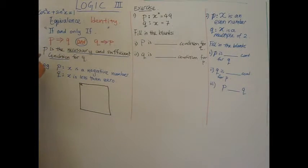We say that P is a necessary and sufficient condition for Q because it's going both ways. Necessary and sufficient condition for Q.